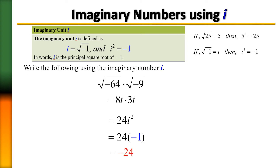So 24 times negative 1 equals negative 24. Had you done this another way — multiplied negative 64 by negative 9 first, gotten positive 576, and found the square root — it would have given you positive 24. So be careful: when you have negative roots, treat them as imaginary numbers. That's why we get negative 24, not positive 24.